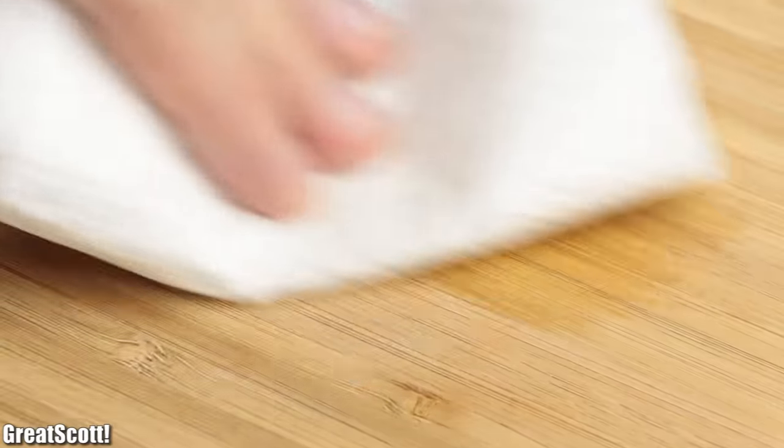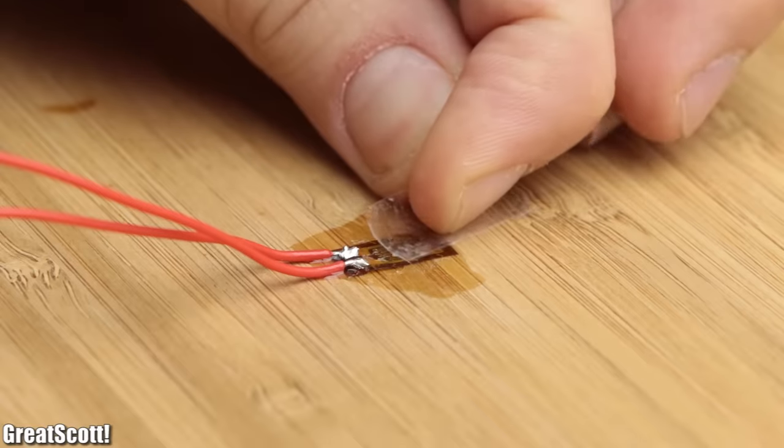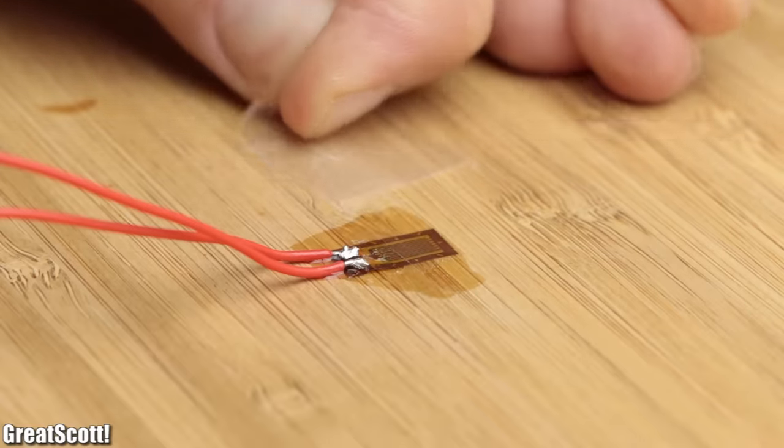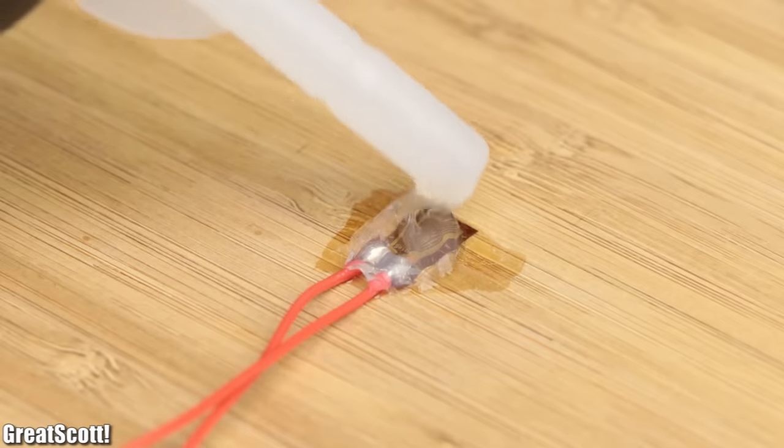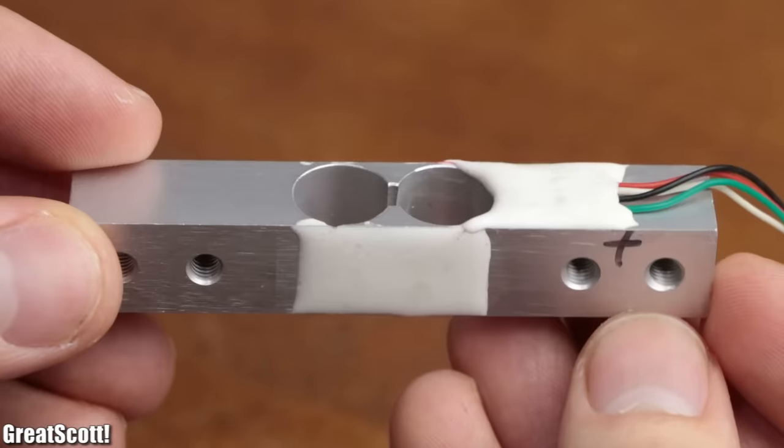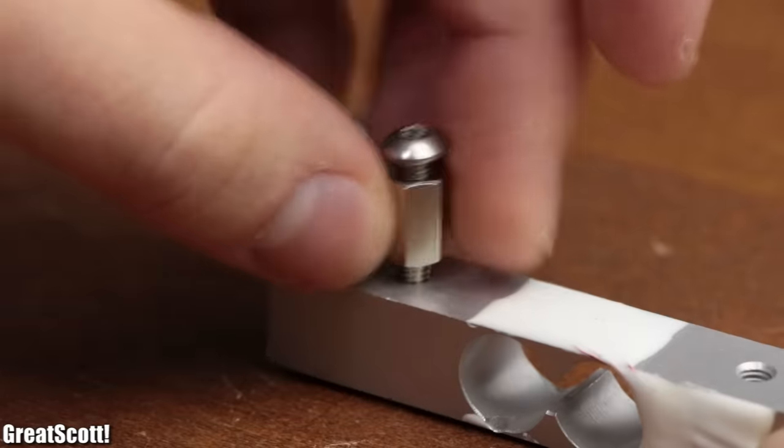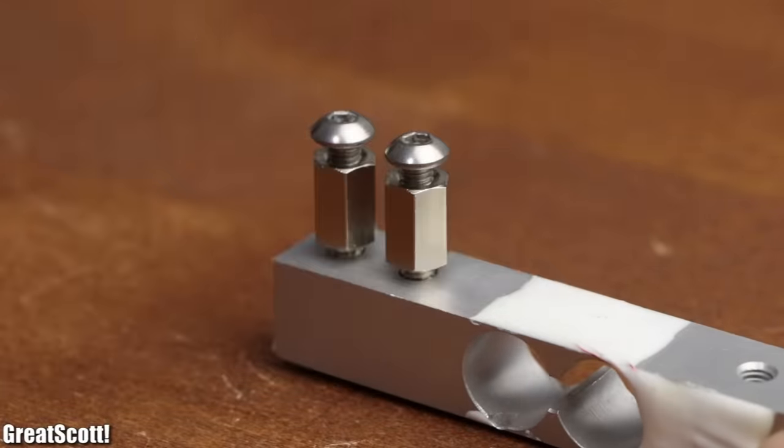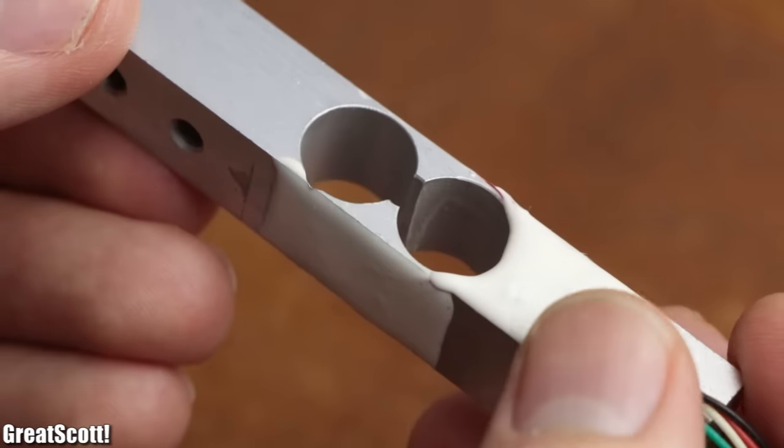But since building up a proper strain gauge setup can be quite daunting and time-consuming, there's also a cheap and easy alternative known as a load cell. Those are basically aluminum profiles with four holes for mounting to which a complete Wheatstone bridge is already attached.